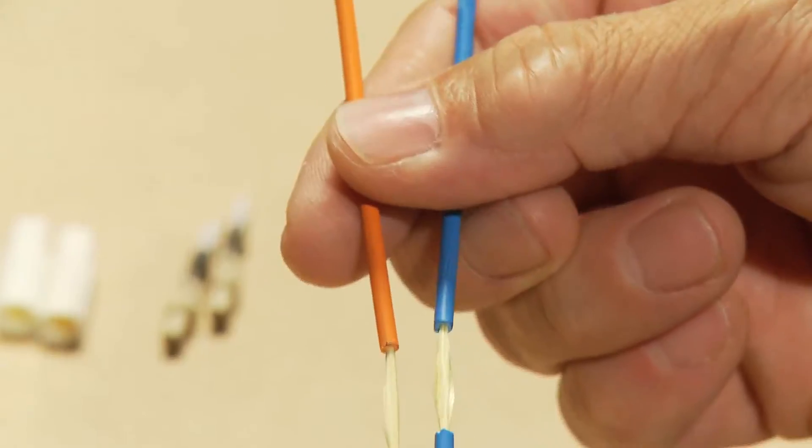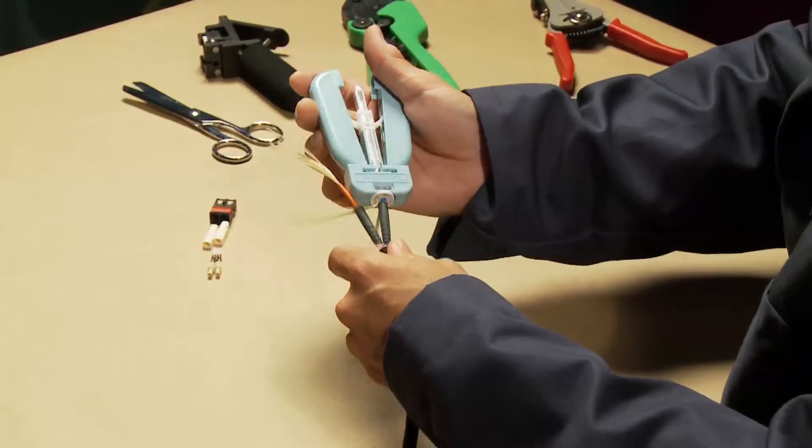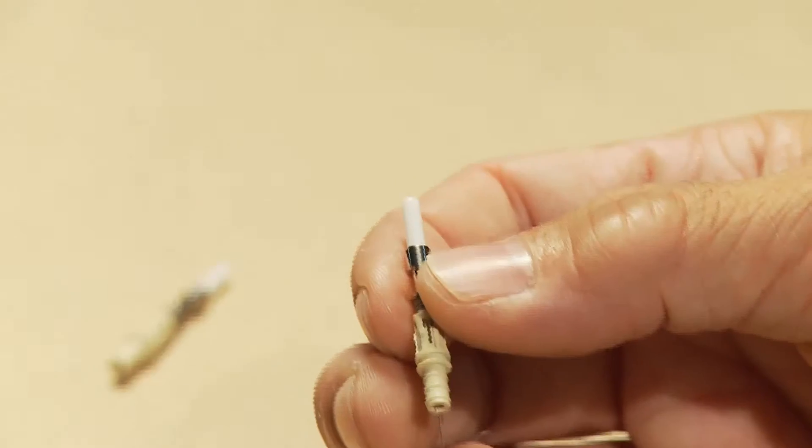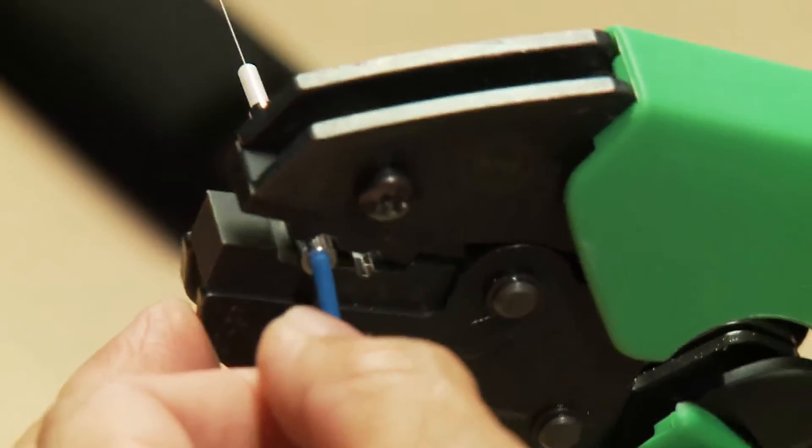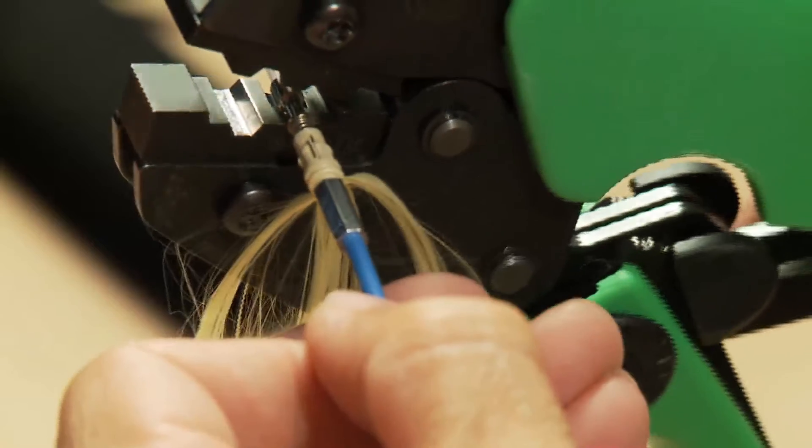Strip the outer jacket, remove the protective buffer, install the connector. Two simple crimps capture the fiber connector and outer jacket.